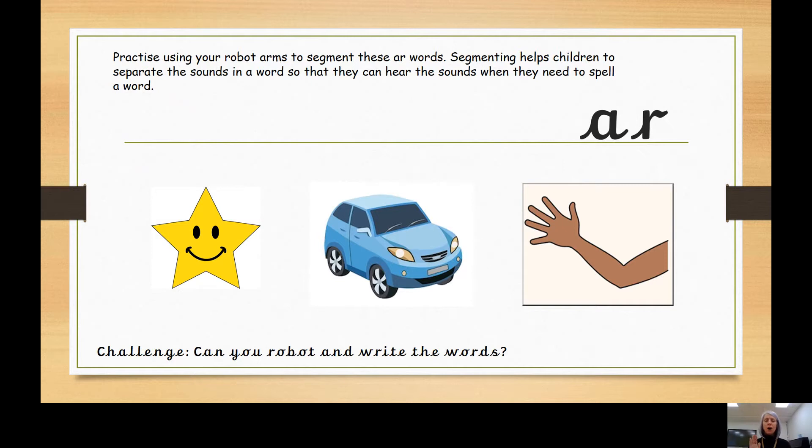We've got a car. Car. And we have an arm. Arm. You see, the AR digraph isn't always in the middle of words. Sometimes it's at the beginning and sometimes it's at the end, and you have to really use your listening ears when you are segmenting to hear all of those sounds carefully.